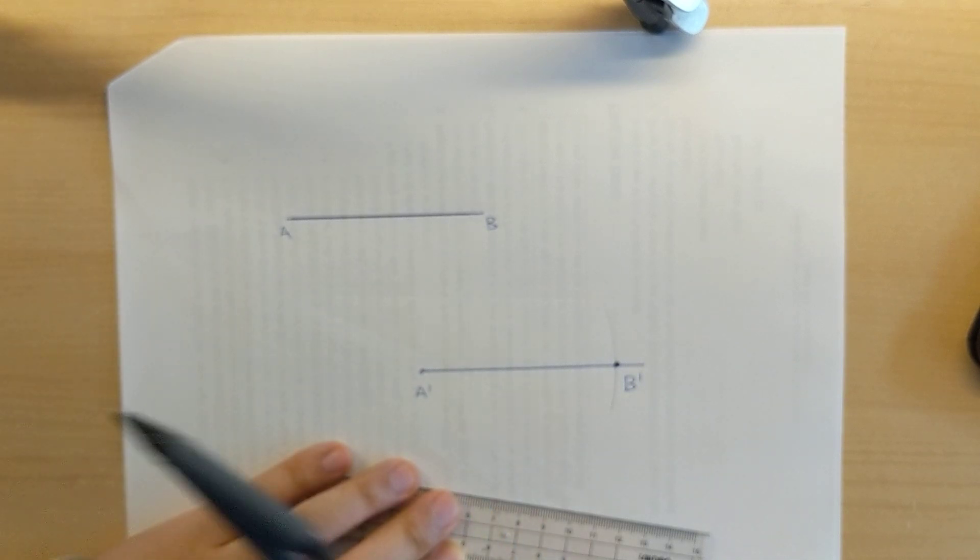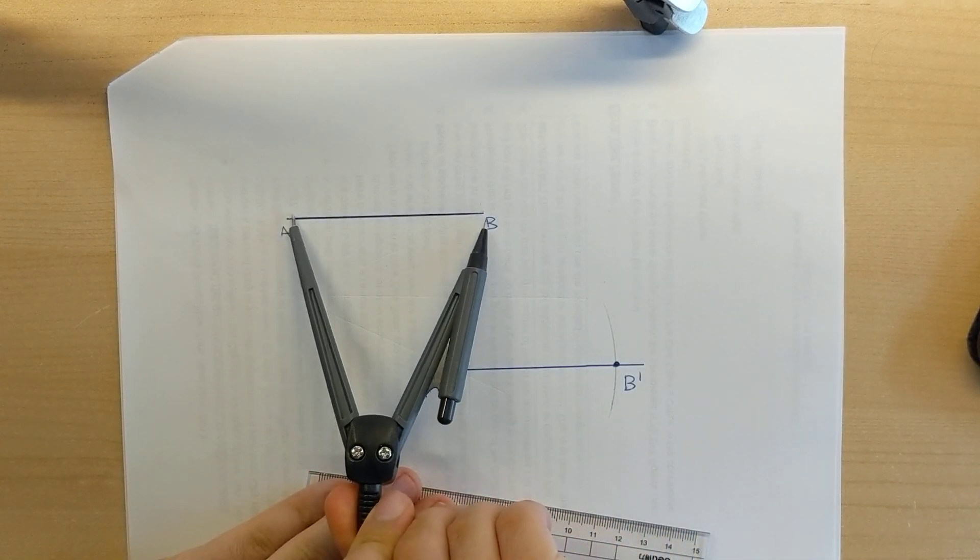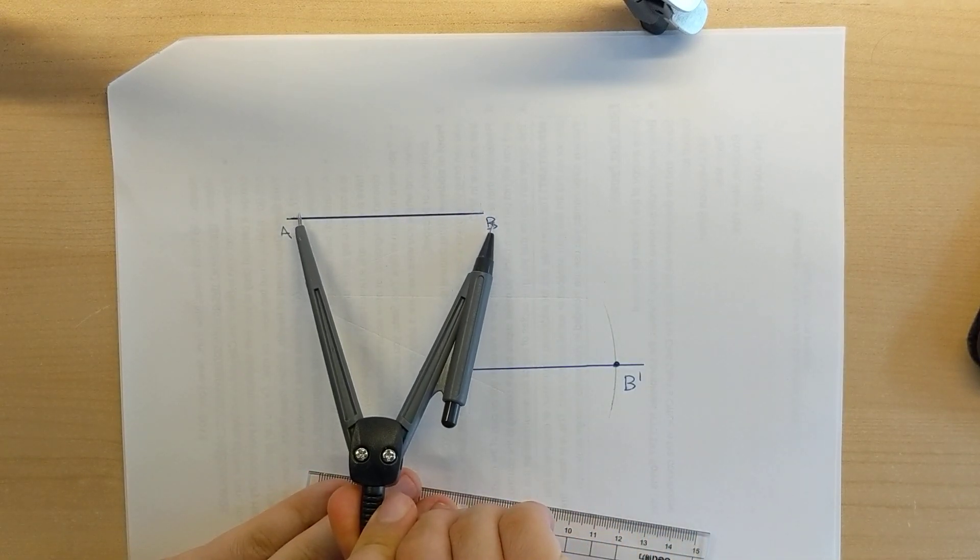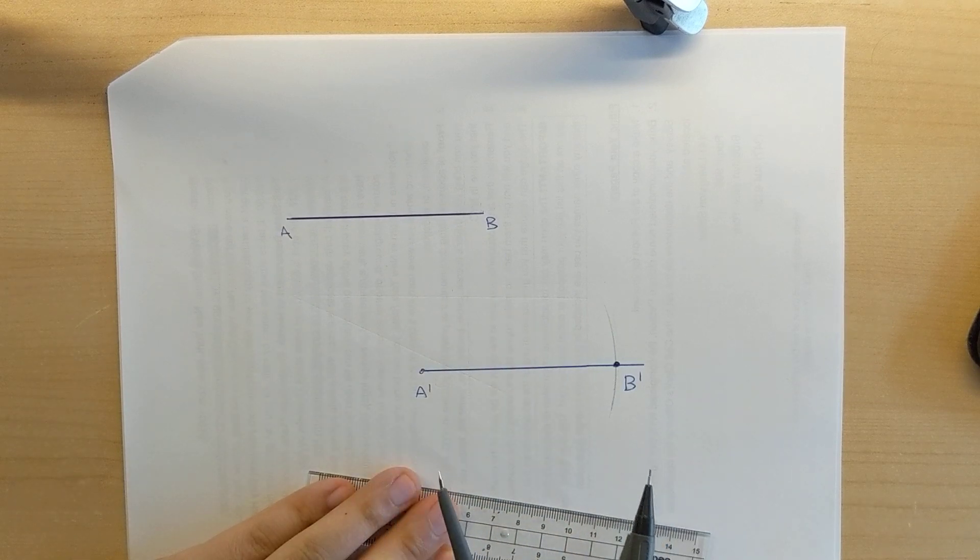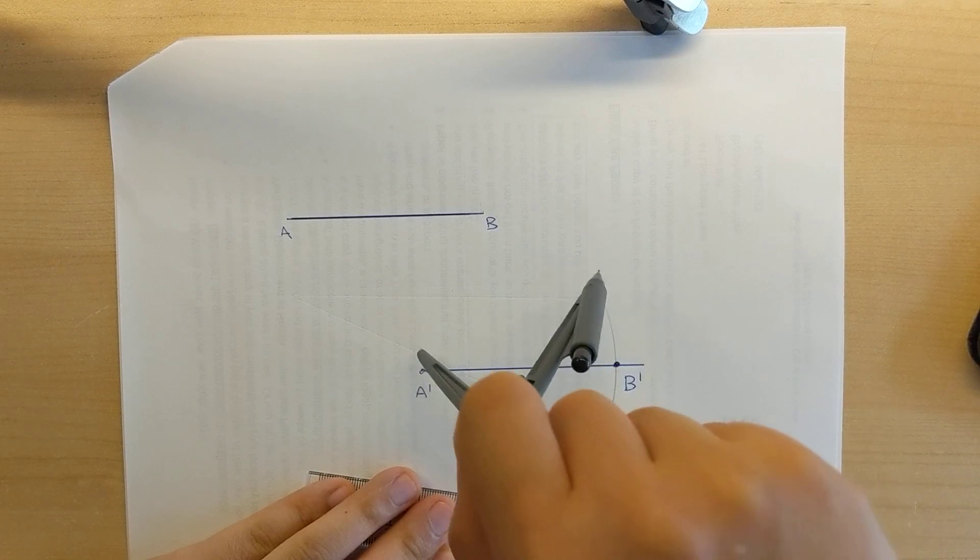So again, the steps are one more time, the compass setting, you're going to open it up to measure the length of line segment AB. Somewhere else on the plane, on your sheet of paper, you're going to place A prime and then you draw an arc.